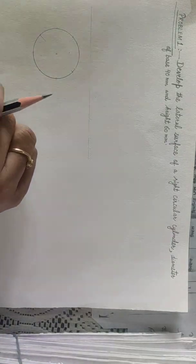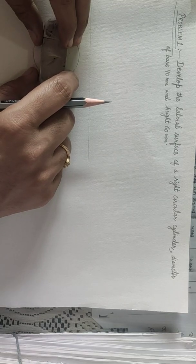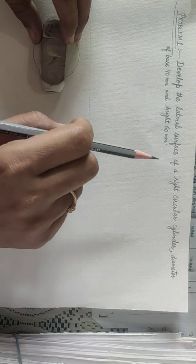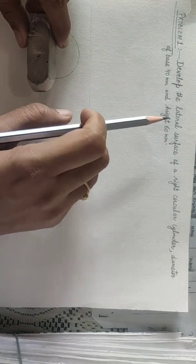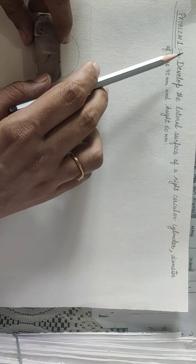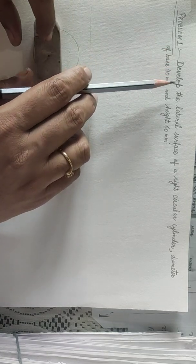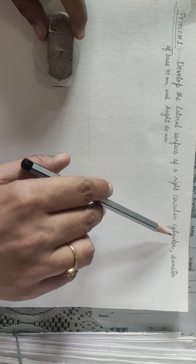Welcome to the class of Engineering Drawing. So in this class our today's topic is development of surfaces. In the development of surfaces I am starting with the right cylinders. So first problem which we will do today is the development of lateral surface of a right circular cylinder.